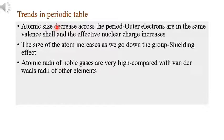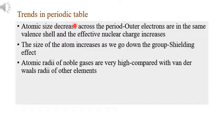We've discussed covalent radius and metallic radius — in general, what is the atomic radius? The trends in the periodic table show that atomic size decreases across a period. Why? Because in a period, the number of shells remains the same, but the number of electrons and protons increases, so the effective nuclear charge increases, causing the atomic size to decrease.